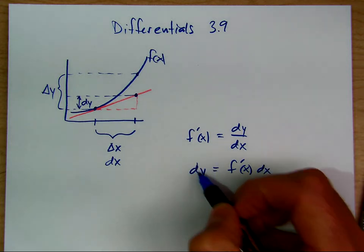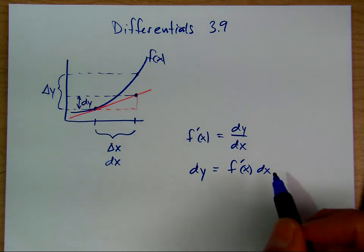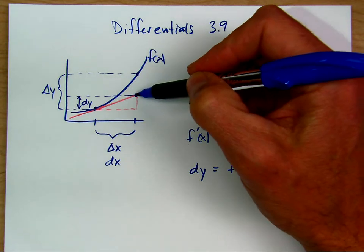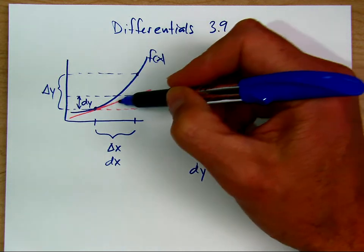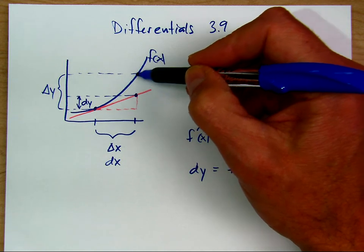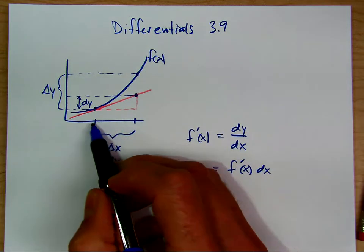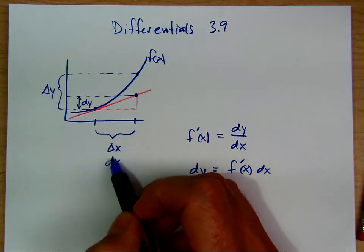Sometimes questions will ask about the differential of y. We're going to focus on using a tangent line to approximate the y value of the function. Tangent lines are linear and easy to evaluate, while functions might be difficult to evaluate. We can say that the y value on the tangent line is close to the y value of the function as long as delta x and dx are small enough.